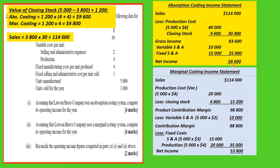The difference between the two incomes is the difference between the closing stock valuations under both methods, which is $4,800. It is also equal to the fixed manufacturing cost per unit multiplied by the closing stock units: 1,200 by $4 equals $4,800.